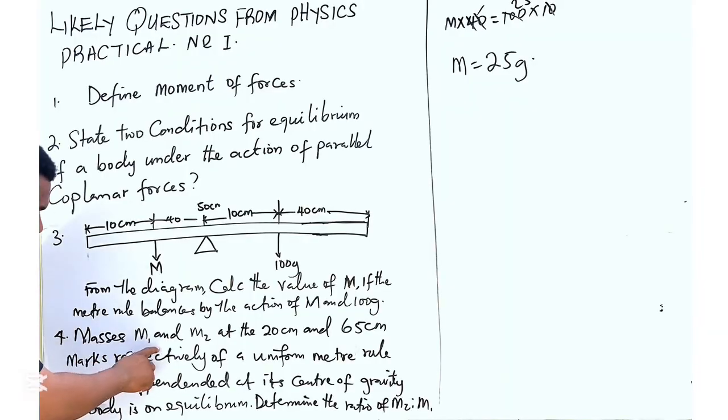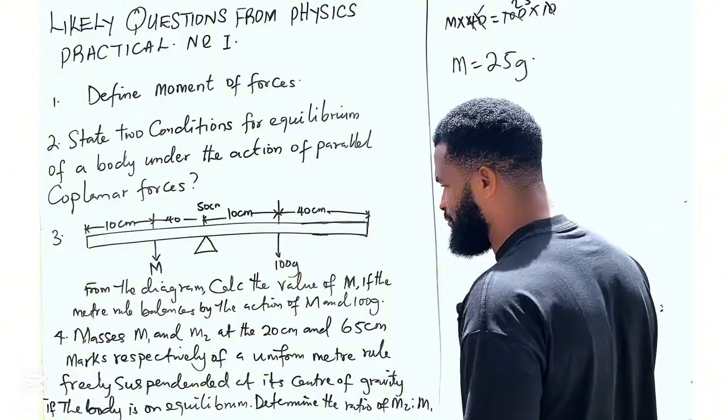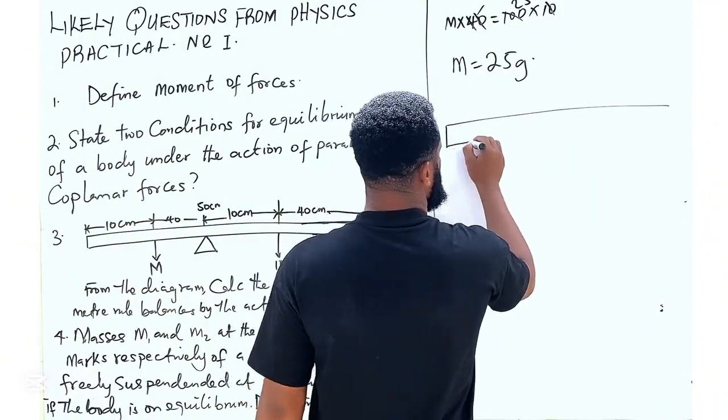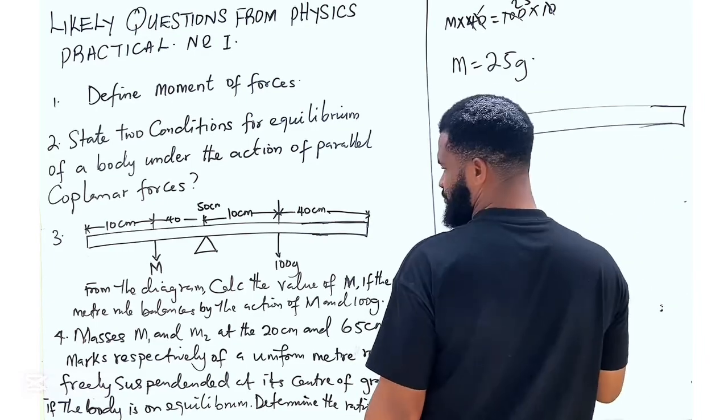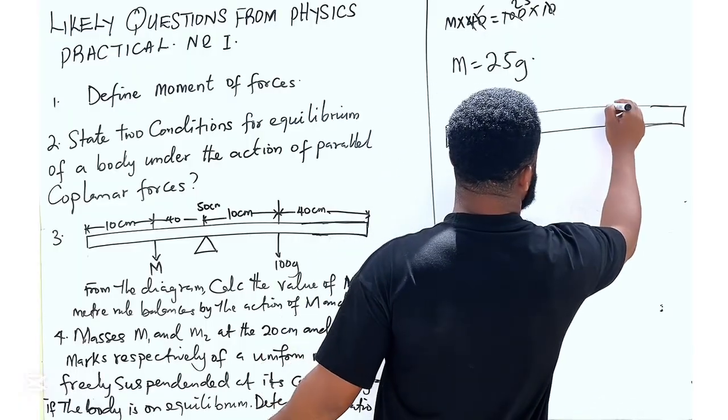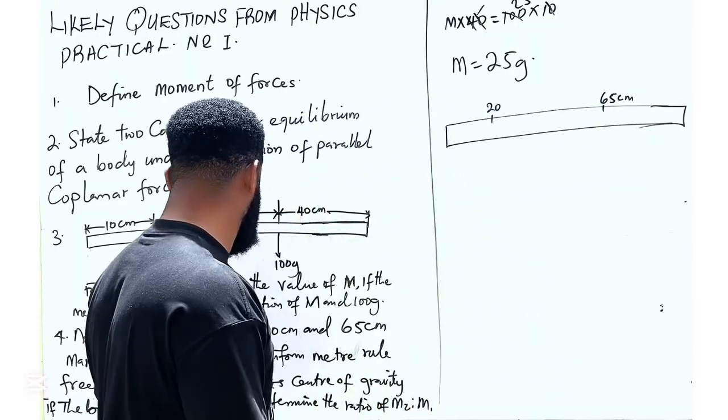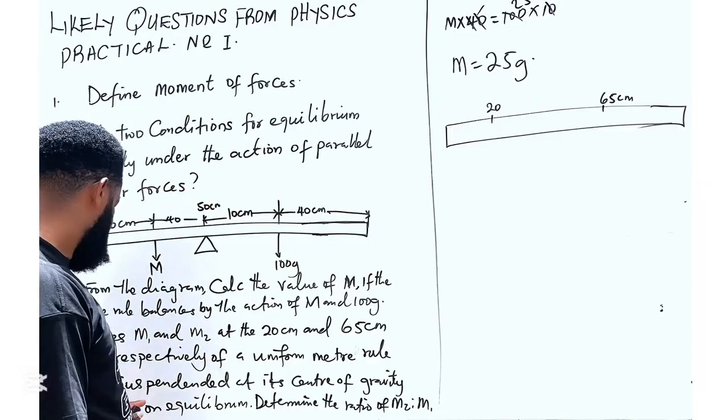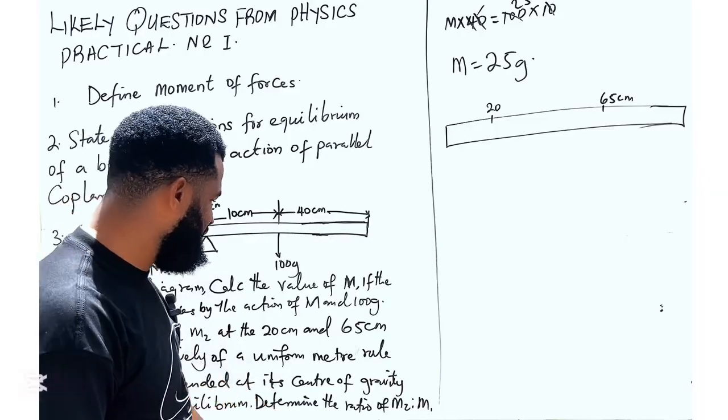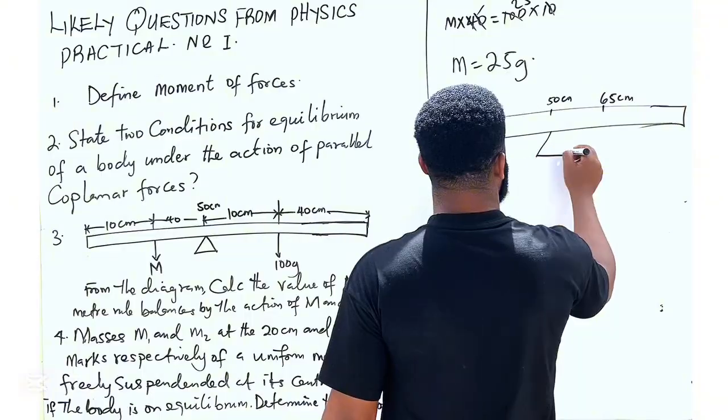Coming to this one, it says a mass m1 and m2 at the 20 and 65 cm mark respectively of a uniform meter rule. So this is the meter rule at 20. So let me call this place 20 cm and let me call this place 65 cm. Freely suspended at its center of gravity. So let me call this place 50 cm, which is the center of gravity.